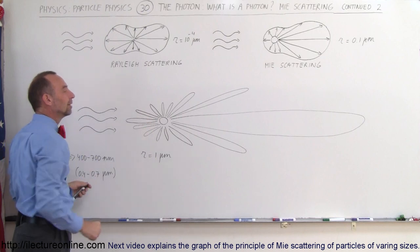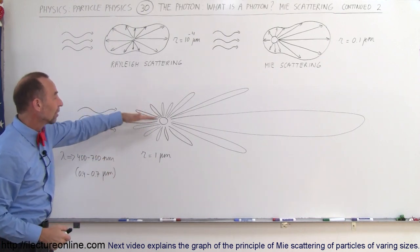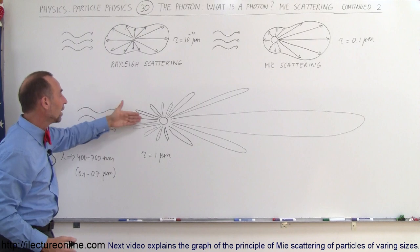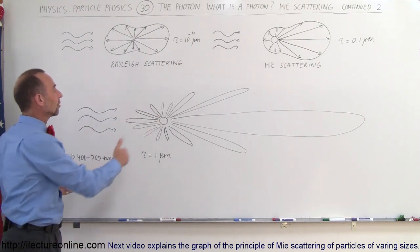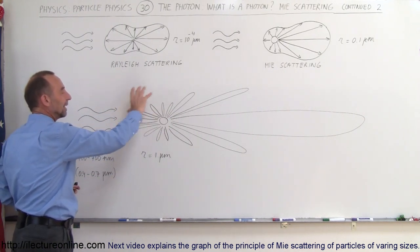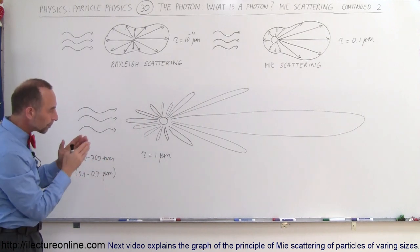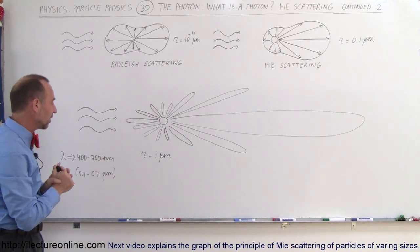And then we have these side lobes here that people have to contend with when they're trying to understand what's going on when they send radio waves to a target and the target then scatters in the same sense as what we call Mie scattering. And then we have these directional lobes of scattering.